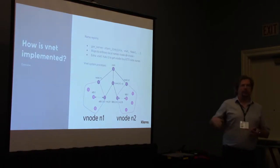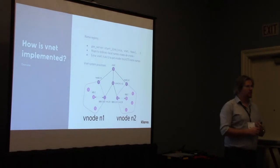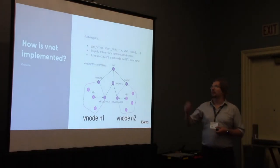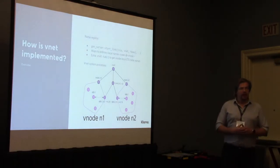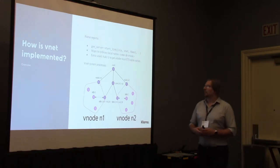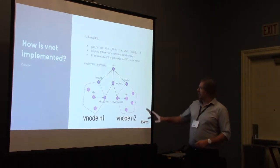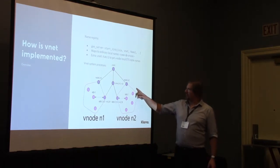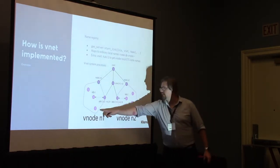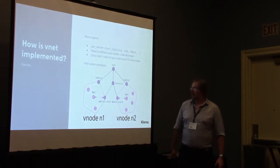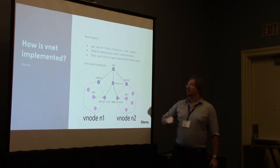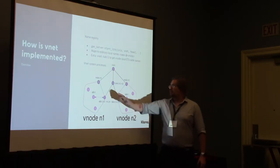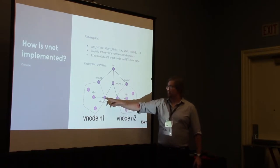VNet has two main components. First, it provides a name registry you can use with VR titles in gen_servers and other behaviors. But the bulk of the simulation is implemented by adding some system processes. In this image you can see two virtual nodes, N1 and N2. The pink dots are ordinary user processes running on those nodes, and the purple dots are system processes added by VNet under the top-level VNet supervisor. We have VNode processes, connection processes, and proxy processes.